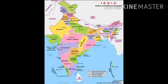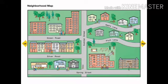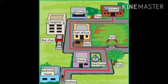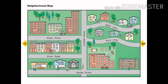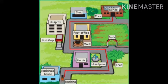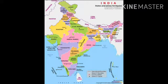Maps help us to locate places easily. Maps can represent small areas such as a neighborhood or huge areas like a map of the world. They can give very detailed information with correct direction, like a map of a city, or can have only one particular kind of information — for example, a map showing the continents of the world.